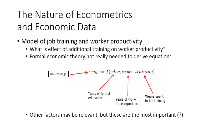Here is another example: a model for constructing the expected relationship between variables. This model is for job training and worker productivity. The question is: what is the effect of additional training on worker productivity? From economic theory, we know that wages could be related to human capital, measured by three variables.